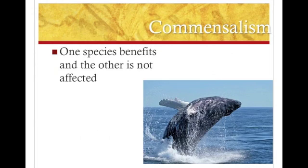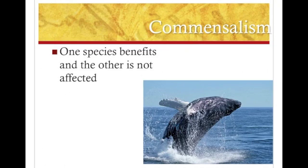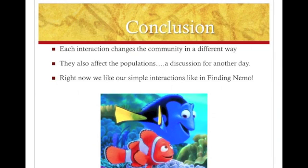The next one is commensalism, which is confusing because one species benefits and the other is not affected. It's hard to tell whether something is affected or not. A lot of times they think the humpback whale and the barnacle are commensalism — the barnacle is getting a free ride and getting fed, and the humpback whale isn't really affected. So when discussing it, you have to clarify that one species is not affected. Those are all the interactions in the community, and they also affect how the populations grow and what's going on with the populations.